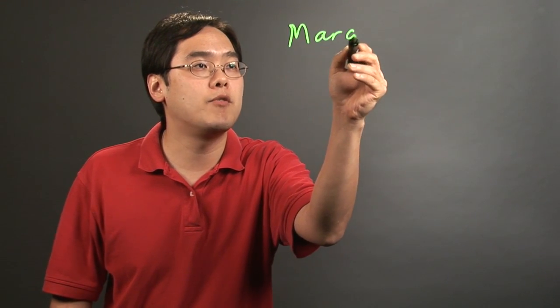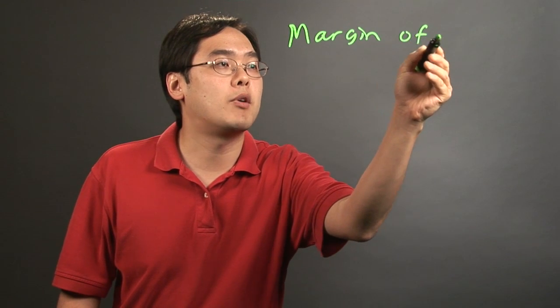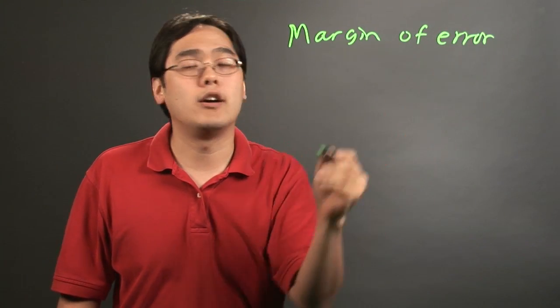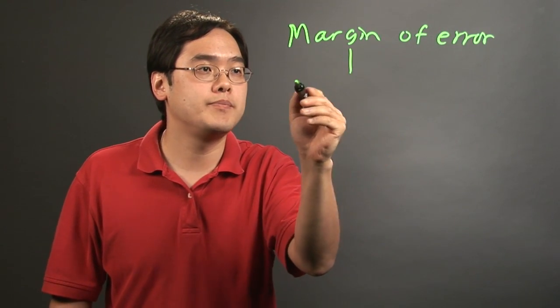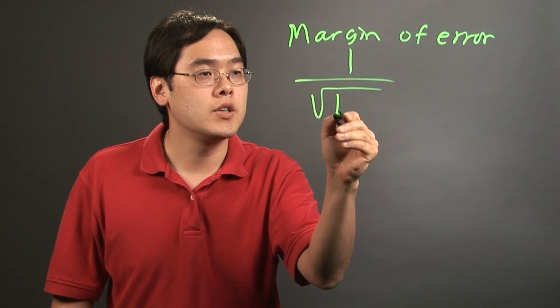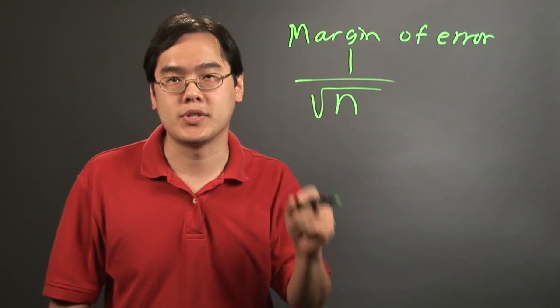One of the most common formulas is the margin of error. The formula for that is 1 over square root of n, where n refers to the sample size.